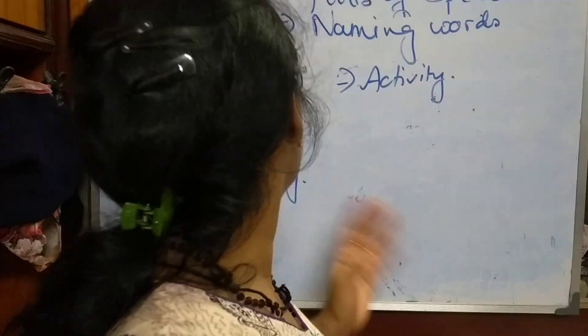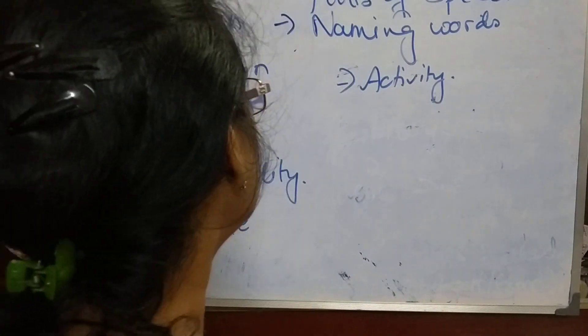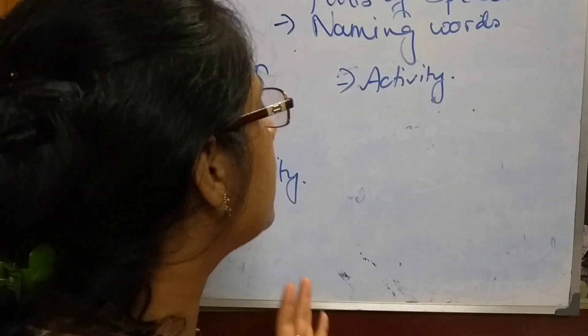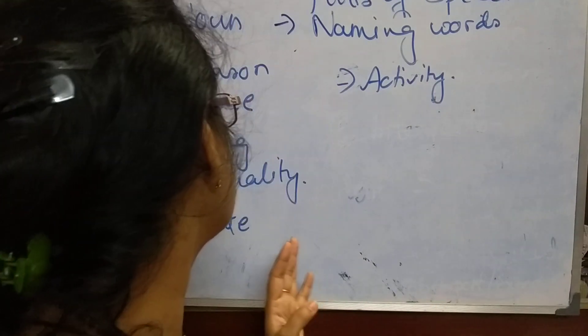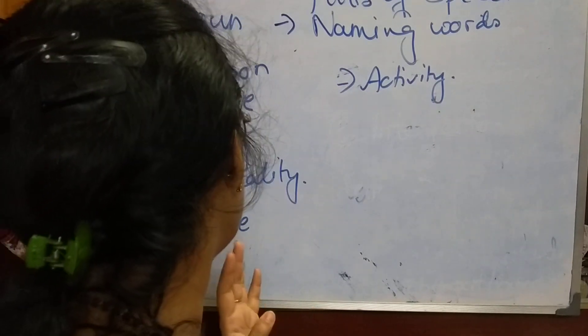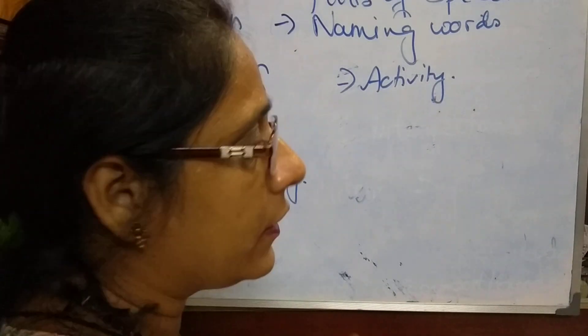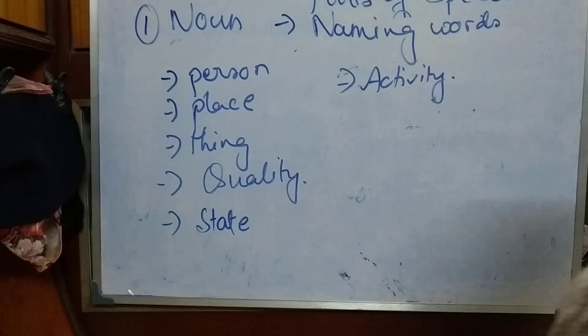What is a noun? A noun is a naming word. A noun is anything which comprises the name of anything — that is a person, place, thing, quality, state, activity, etc. The noun are of four types.